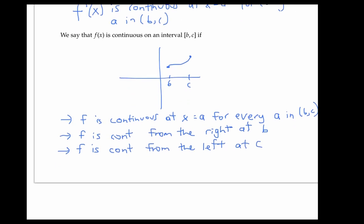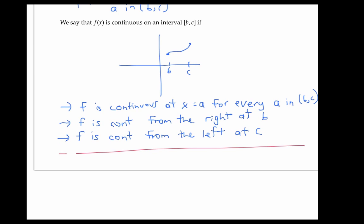We can also talk about f being continuous on half open intervals. For example, on the half open interval BC, which is open at B and closed at C, or the other way around, or the half open interval from B to infinity and so on.